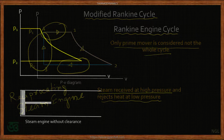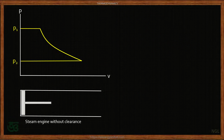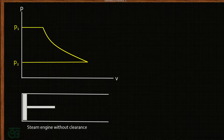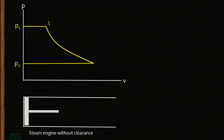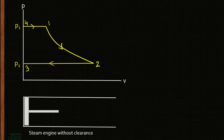We will consider a steam engine as the prime mover. This is a PV diagram for a reciprocating steam engine without any clearance volume. Process 1-2 is expansion of steam inside the cylinder, process 2-3 is exhaust of steam from the cylinder to the outside or atmosphere, and process 4-1 is receiving of high pressure, high temperature steam into the cylinder. This cycle is called the Rankine engine cycle.